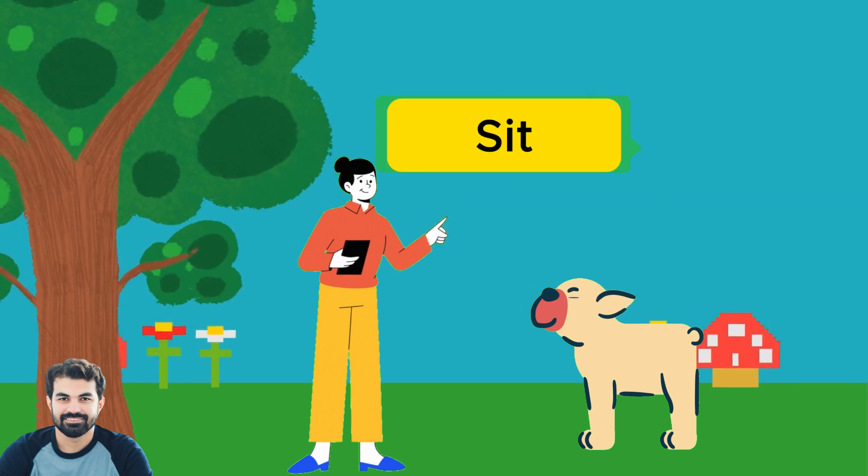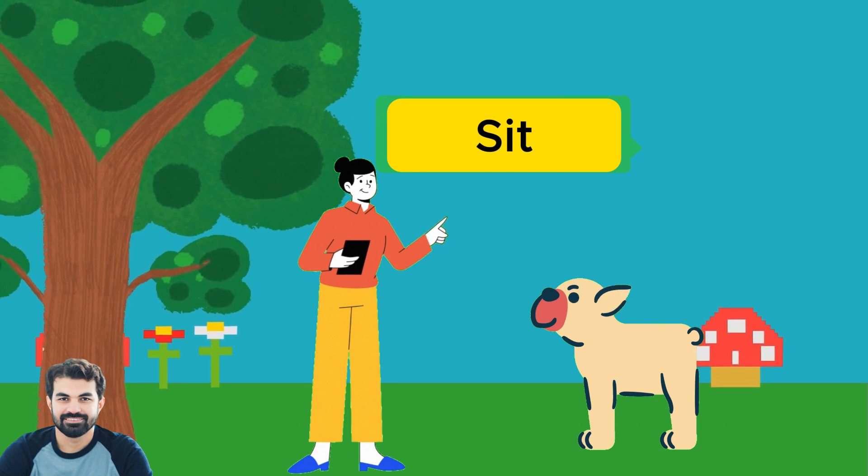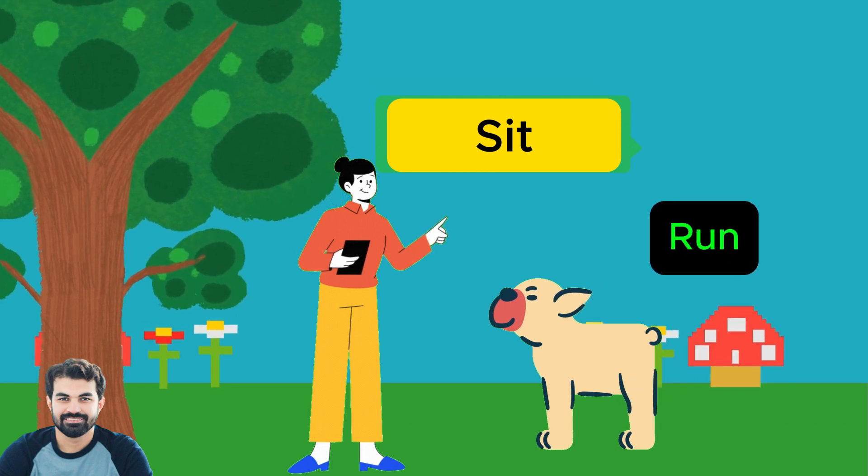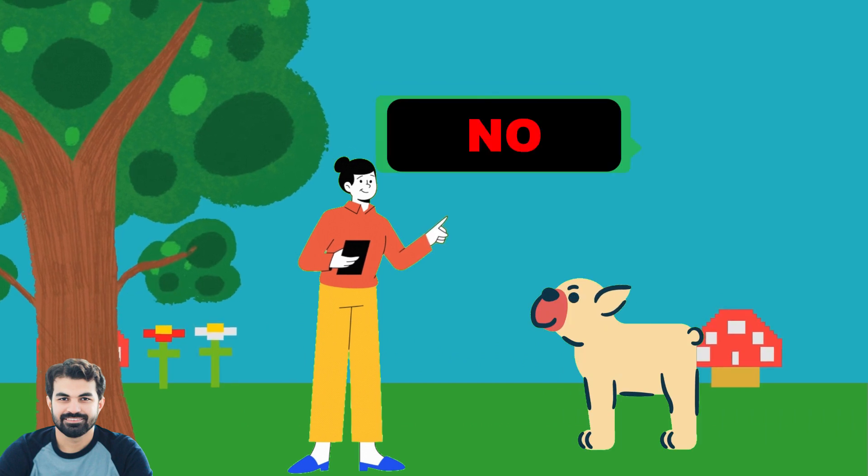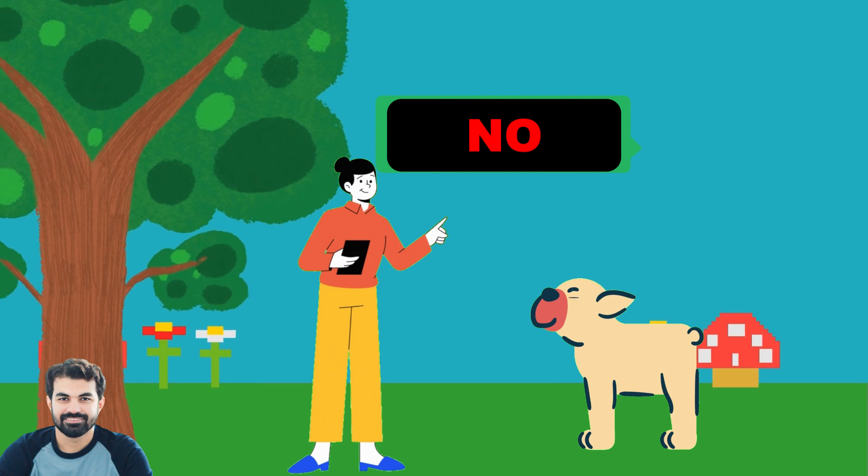But the scenario changes. The owner gives a new command and the dog must decide how to respond. Jumping worked well last time, but this command looks different. Should he try something else? Again, he picks an action at random and decides to run. Unfortunately, this time the feedback from his owner is negative.